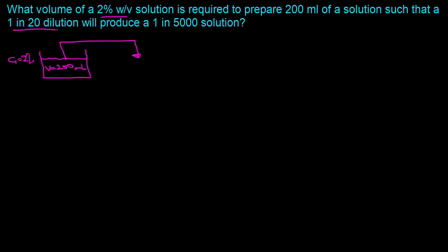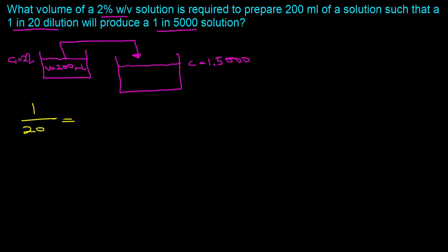The way you find the total mixture volume is to make use of the 1 in 20 dilution and the ultimate concentration. What's going to happen is you take all 200 milliliters and prepare a total quantity that will have a concentration of 1 in 5000. To determine the volume of the two percent weight by volume solution, we need to work backwards. The first thing to find is the total volume of the preparation, given the 1 in 20 dilution. We take 1 in 20 as one part over a total of 20 parts, and set that equal to 200 milliliters divided by x.